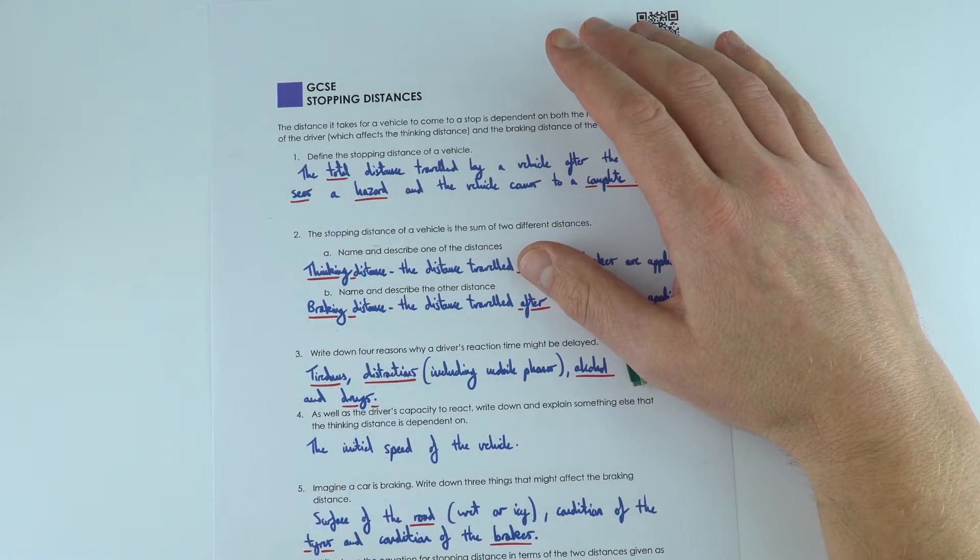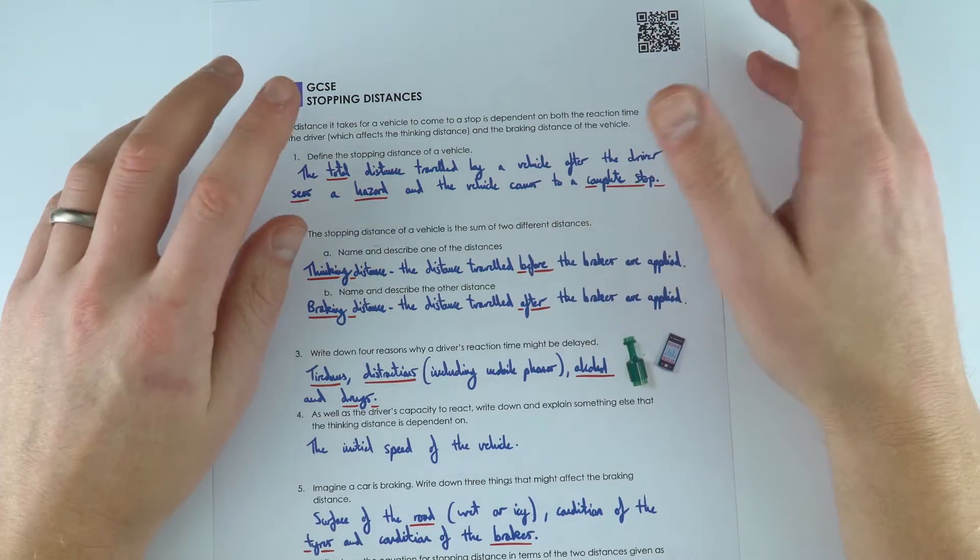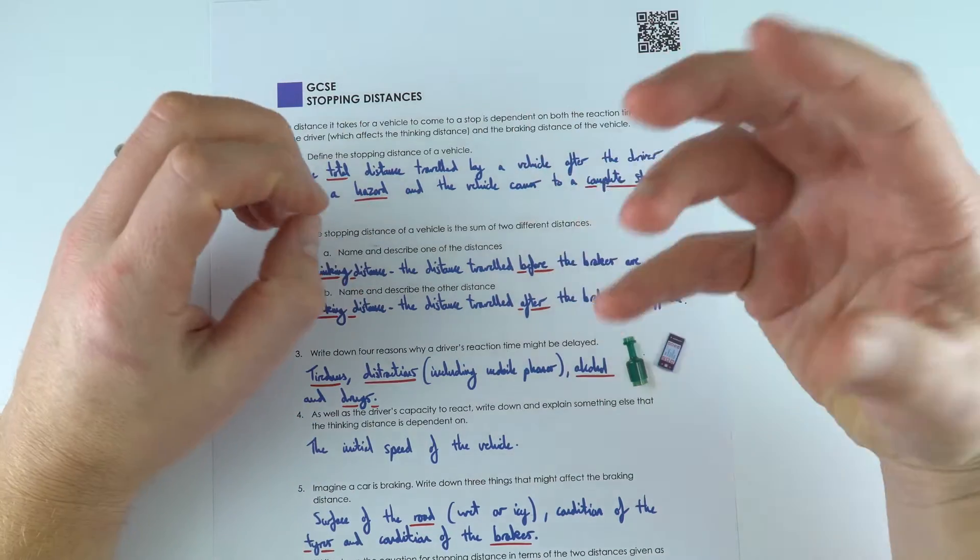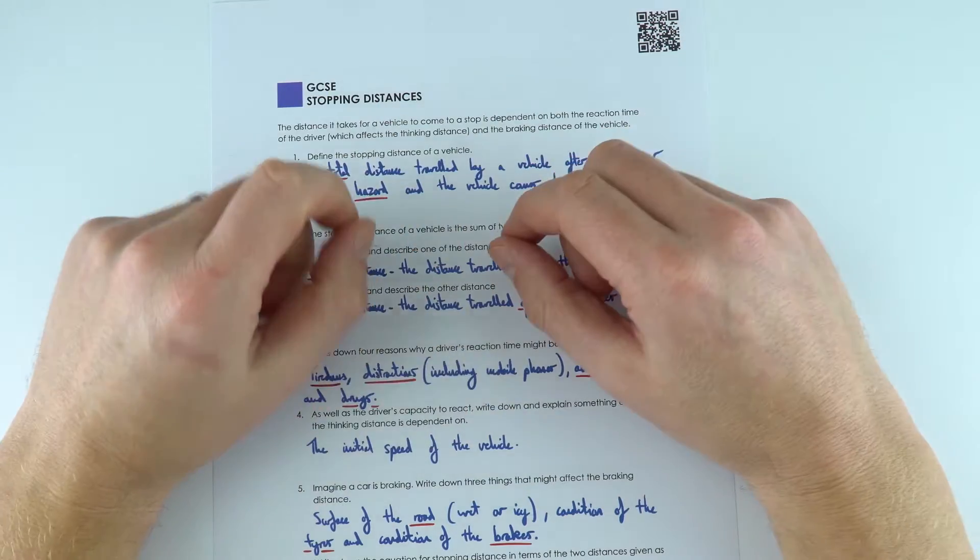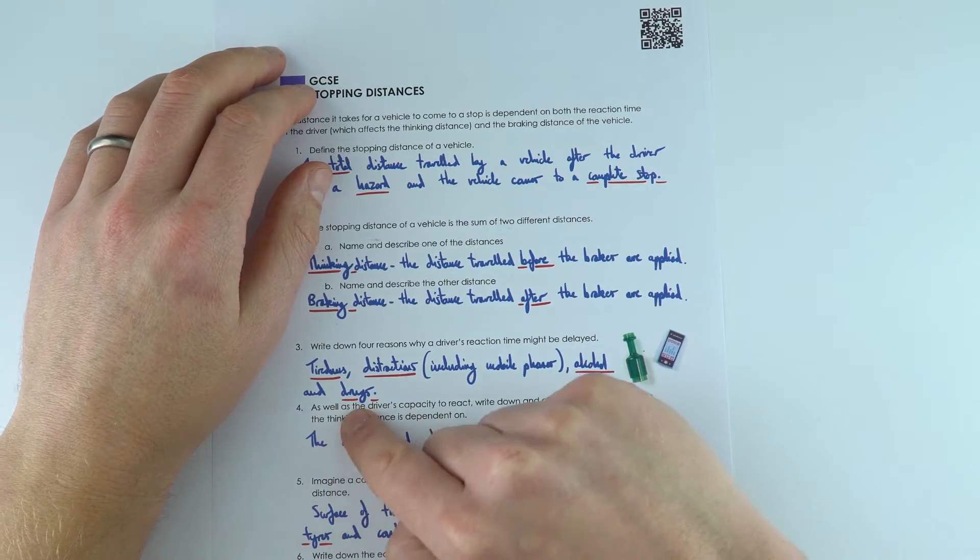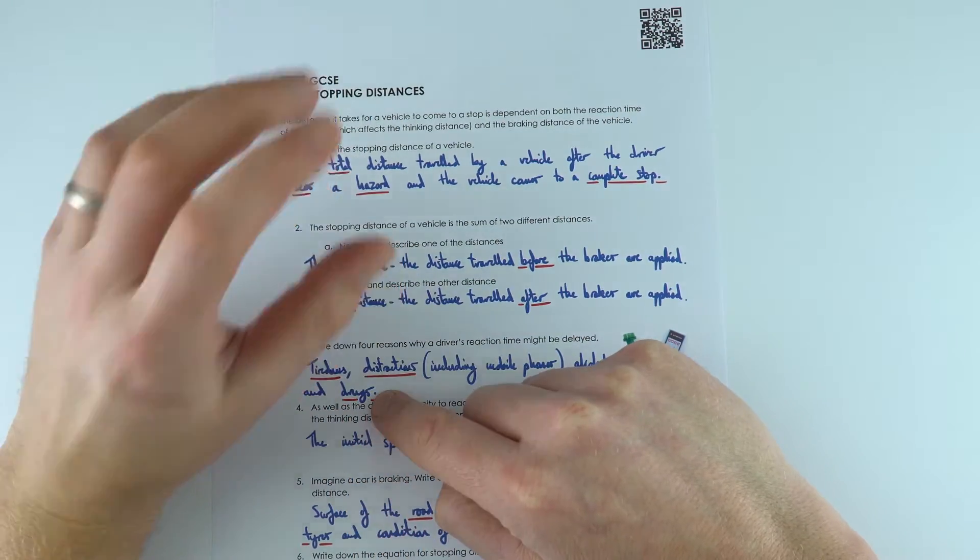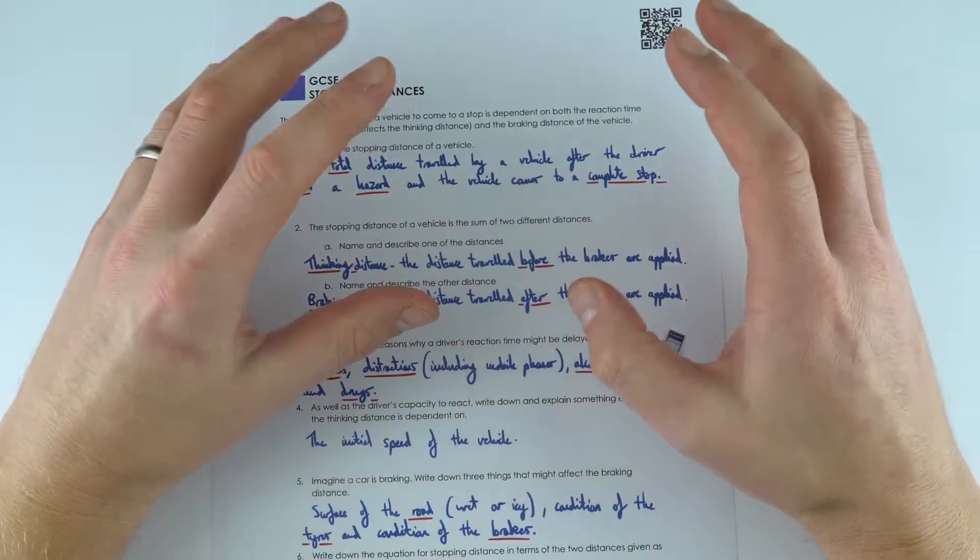Now the thinking distance can be affected by tiredness, distractions including people looking at their mobile phones and texting, maybe playing with the radio, alcohol, and also many drugs as well. This can include both the legal drugs and illegal drugs.